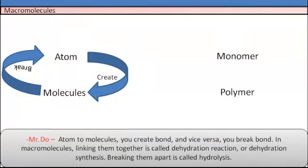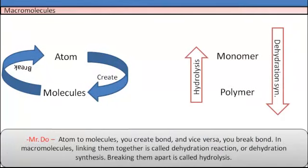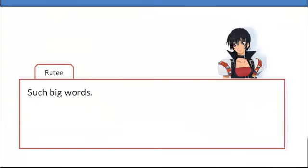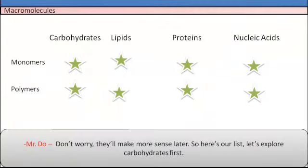Atom to molecules you create bonds and vice versa you break bonds. In macromolecules, linking them together is called dehydration synthesis or dehydration reaction. Breaking them apart is called hydrolysis. Don't worry, they'll make more sense later on.